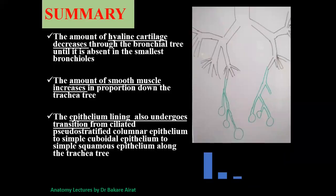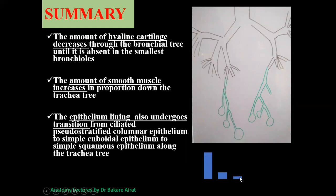In summary, from the trachea down to the terminal alveoli: the C-ring cartilage gradually becomes irregular then disappears; the amount of smooth muscle increases; and the epithelium transforms from ciliated pseudostratified columnar epithelium in the trachea, to simple cuboidal in the bronchioles, and finally to simple squamous on the alveolar surface. The thickness reduces progressively — from columnar to cuboidal to squamous — all to allow refinement so that the final edge is thin enough for easy gas exchange.